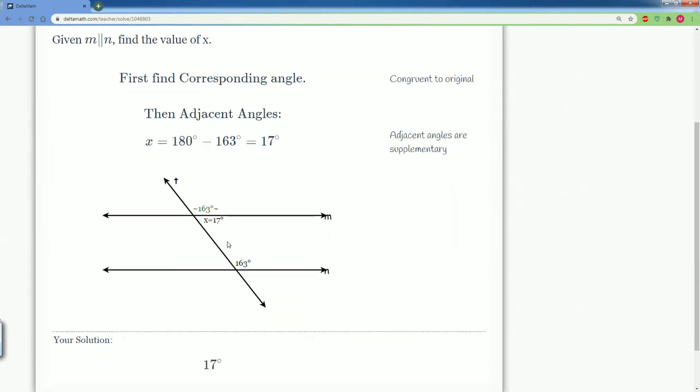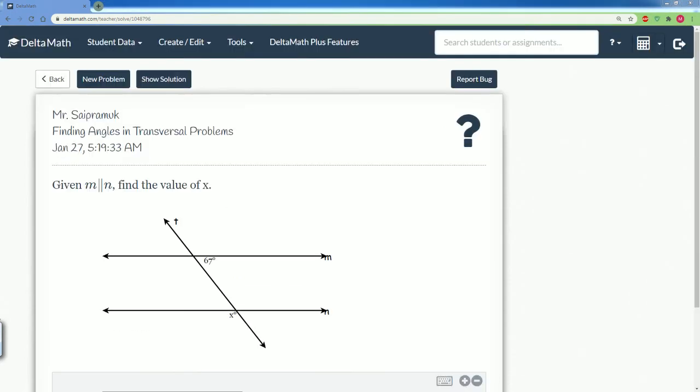Here, the way they did it is they moved the 163 up, but they still get the same answer as what we did. The name for this is corresponding angle, and they saw that the adjacent angles here are supplementary, which is equivalent to us saying that they are linear pairs.